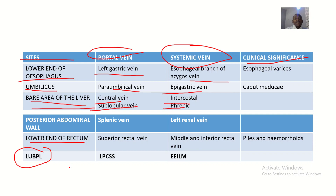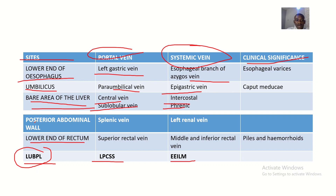Now for the mnemonics: the mnemonic for the sites is LUBPL — lower end of esophagus, umbilical, bare area of liver, posterior abdominal wall, and lower end of rectum.